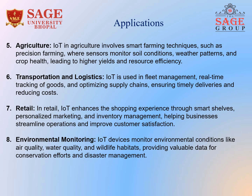IoT is also widely used in the agriculture sector, involving smart farming techniques such as precision farming, where sensors monitor soil conditions, weather patterns, and crop health, leading to higher yield and resource efficiency. In transportation and logistics, IoT is used in fleet management, real-time tracking of goods, and optimizing supply chains, ensuring timely deliveries and reducing cost.